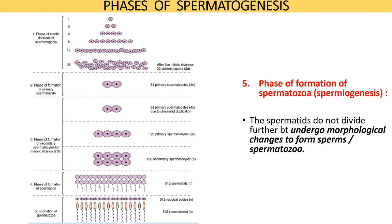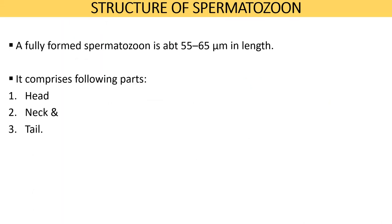The fifth and last phase of spermatogenesis includes the formation of spermatozoa, a process also called spermiogenesis. The spermatids do not divide further in this phase, but undergo morphological changes in shape and orientation of their organelles to form spermatozoa. These changes occur in the deep folds of the cytoplasm of the Sertoli cells. Now let us see the structure of a spermatozoan.